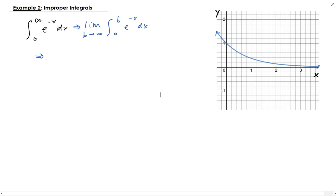Using the substitution rule, we let u be minus x, and then that gives us du equals minus dx. Therefore we take the limit as b goes to infinity of minus e to the negative x going from zero to b.